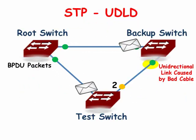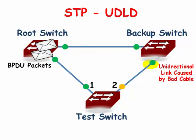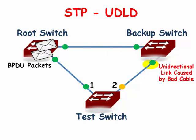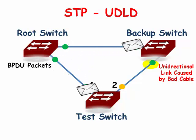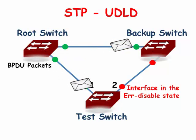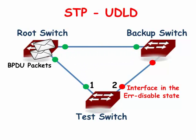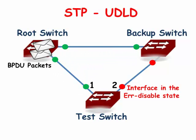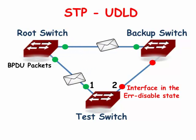Now, let's look at the scenario again, assuming that we have configured UDLD on every switch interface that is connected to another switch. The backup switch is unable to send BPDUs because of the damaged cable, and so the test switch's second interface comes out of the blocking state. The test switch knows that it was previously indirectly connected to the root switch through interface 2, but now it suddenly stopped receiving BPDUs. UDLD will assume that the interface link is now unidirectional and put the interface in the error-disabled state, since it is using the aggressive mode.